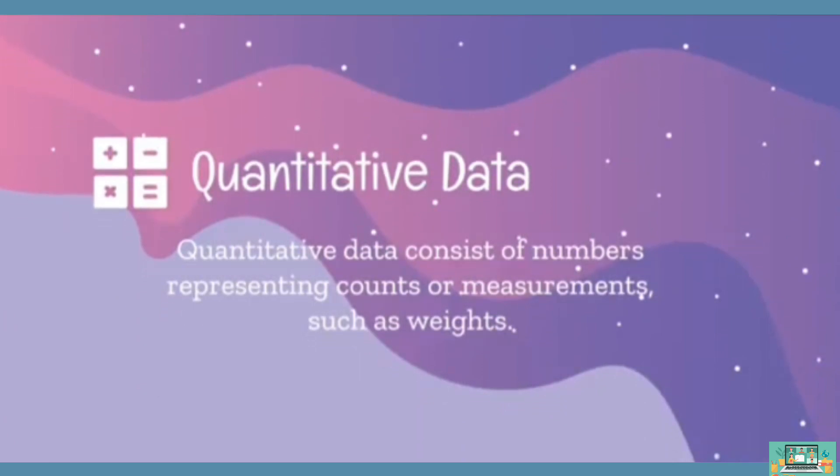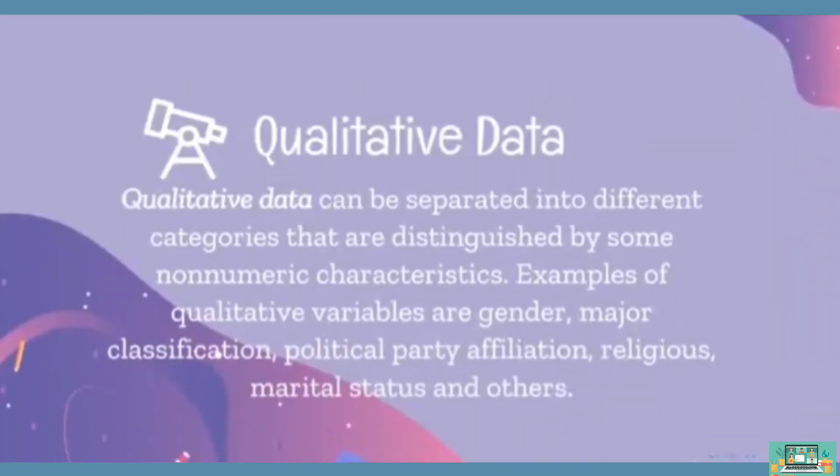Quantitative data consists of numbers representing counts or measurements such as rates. Qualitative data can be separated into different categories that are distinguished by some non-numeric characteristics. Examples of qualitative variables are gender, major classification, political party affiliation, religious, marital status and others.